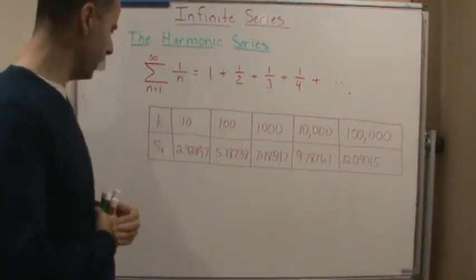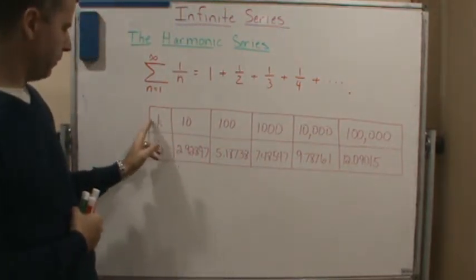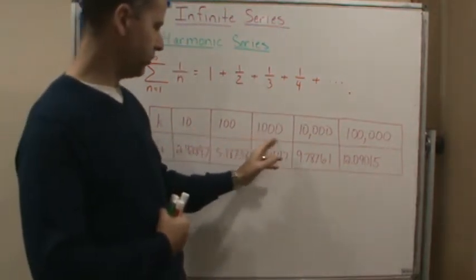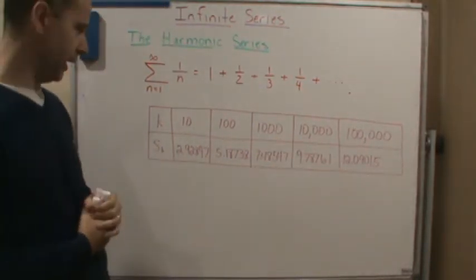So just to give you an idea, look, here's some of the values on this table for k equals 10, 100, so multiples of 10, or powers of 10, I should say.